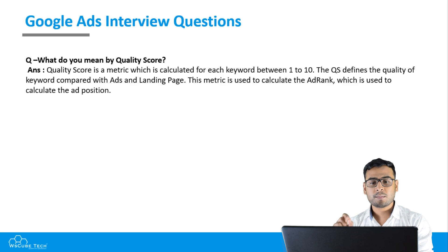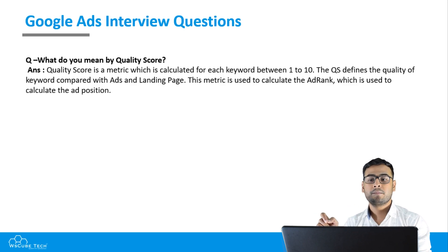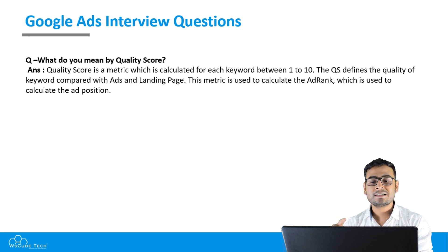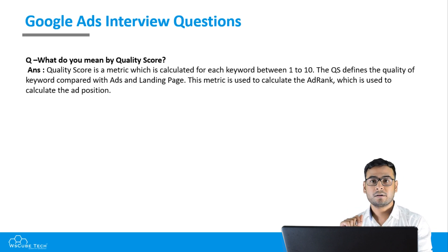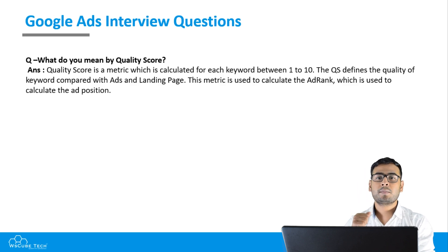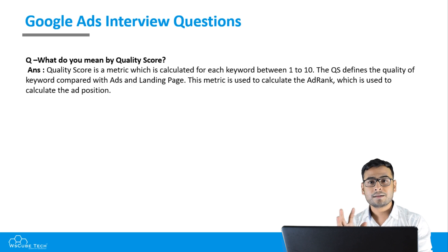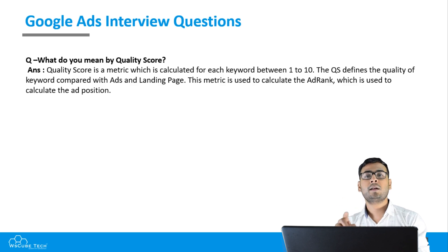Quality score is a metric which is calculated for each keyword, on a scale of 1 to 10. The quality score defines the quality of the keyword compared with the ad and the landing page. This metric is used to calculate the ad rank, which in turn is used to calculate the ad position — whether your ad appears in 3rd or 4th position.